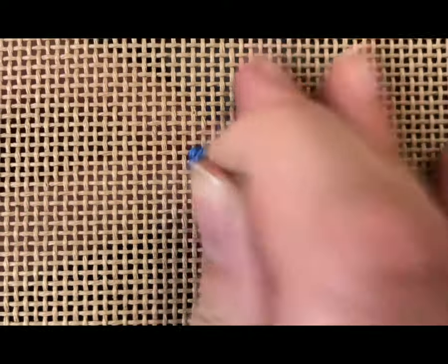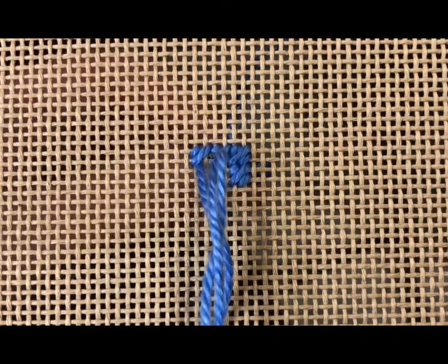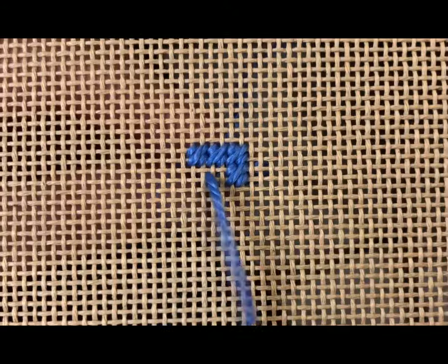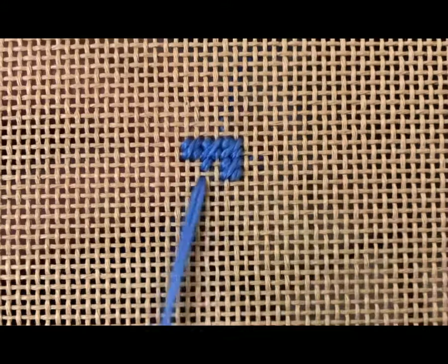And you can see that my tent stitch will end in the same hole that my prior tent stitch started in. So now I will work the pattern down, and now you can really start to see that my tent stitches are aligning and my long stitches are aligning.